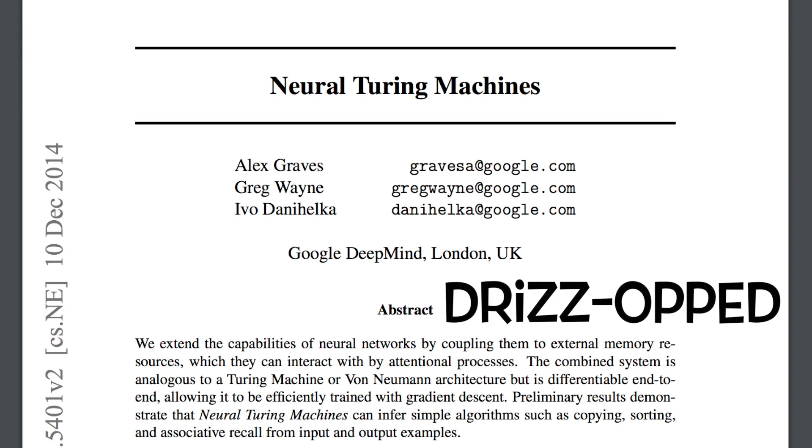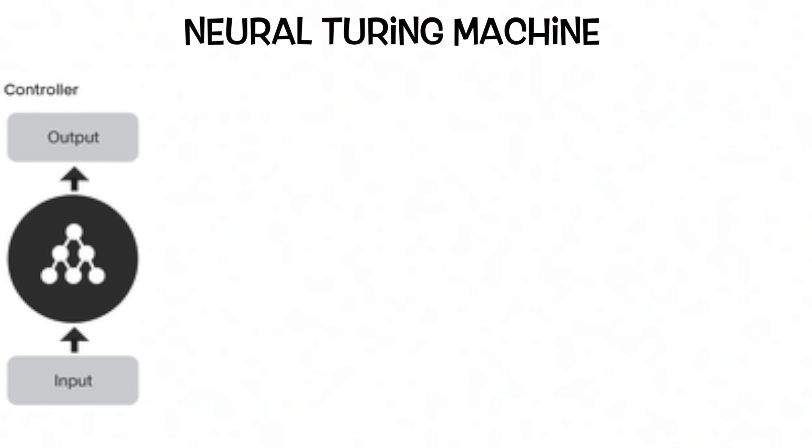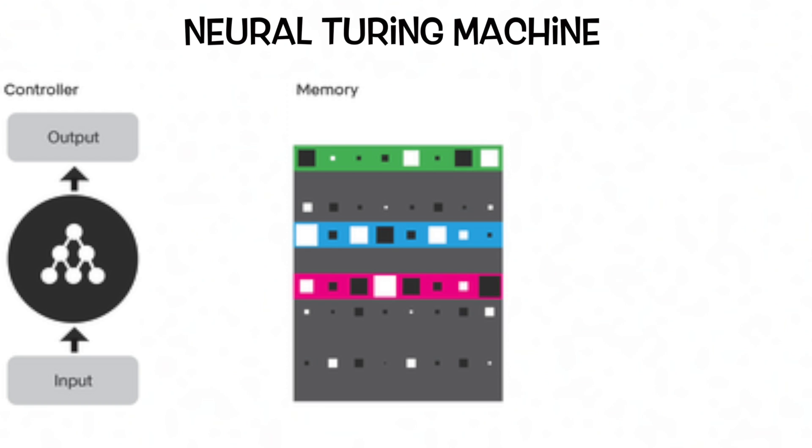DeepMind first introduced the idea of NTMs in 2014. It contains two components: the first is a neural network that we call the controller, and the other is a memory bank. The controller takes vectors as inputs and outputs vectors as well, just like all neural nets.